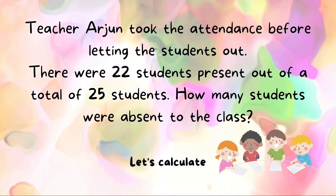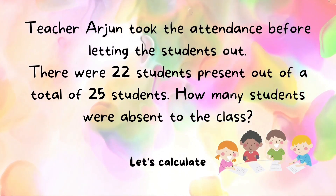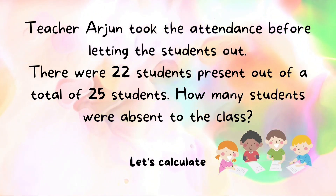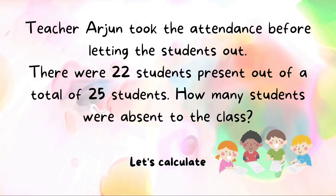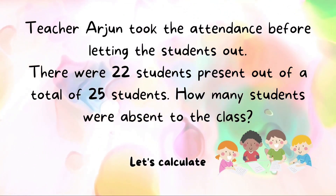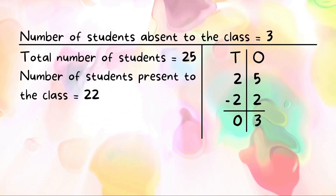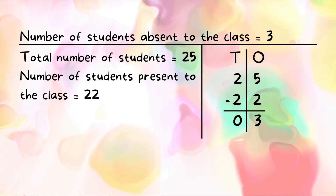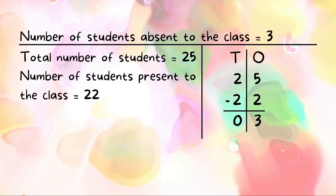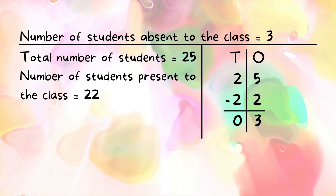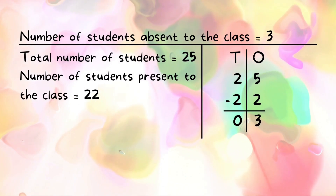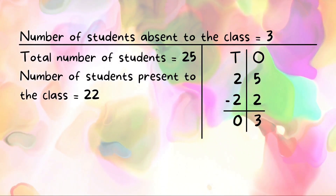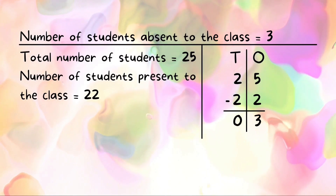Teacher Arjun took attendance before letting the students out. There were 22 students present out of a total of 25 students. How many students were absent from the class? Let's calculate using the T-chart. We write the facts on the left: total number of students equals 25, number of students present equals 22.